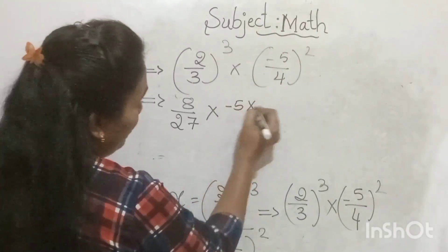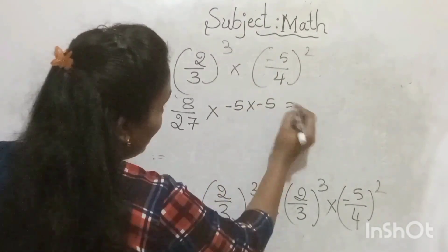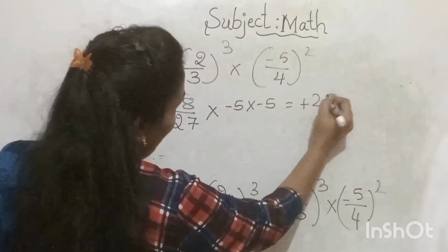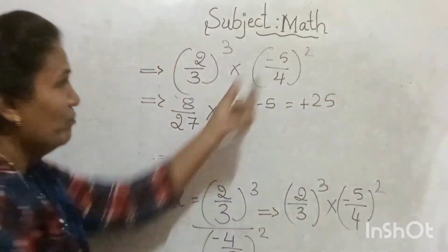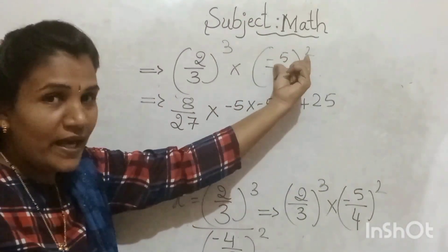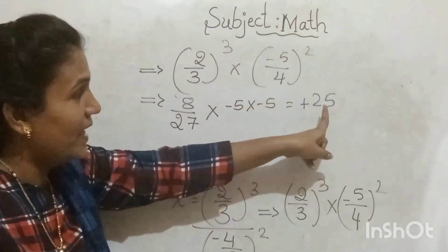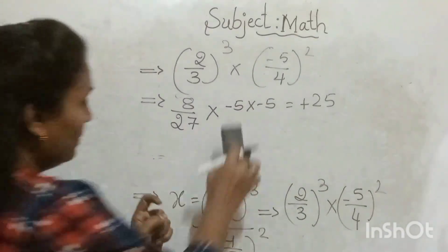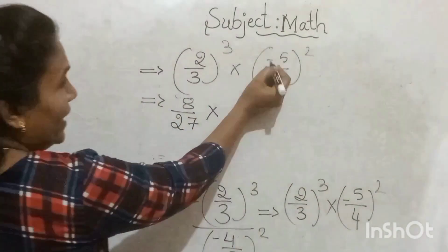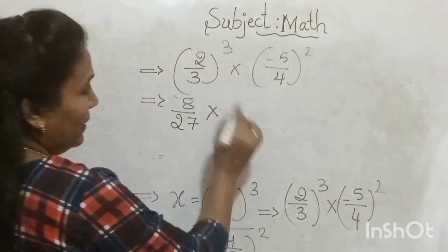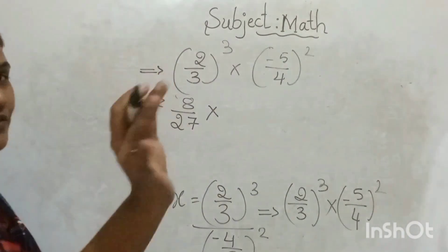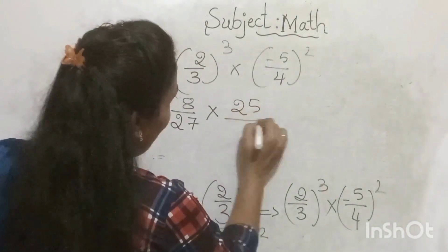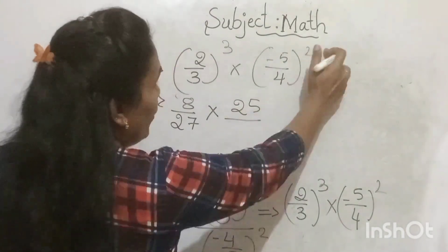(-5) × (-5) means minus × minus = plus, so 5 × 5 = 25. Instead of (-5)², I will write the answer 25. So (-5)² = 25, giving us 25 in the numerator. The denominator has 4², and this square is applicable for both numerator and denominator.